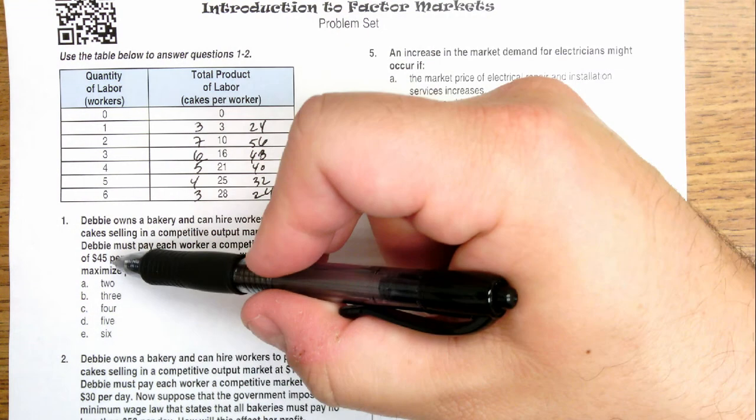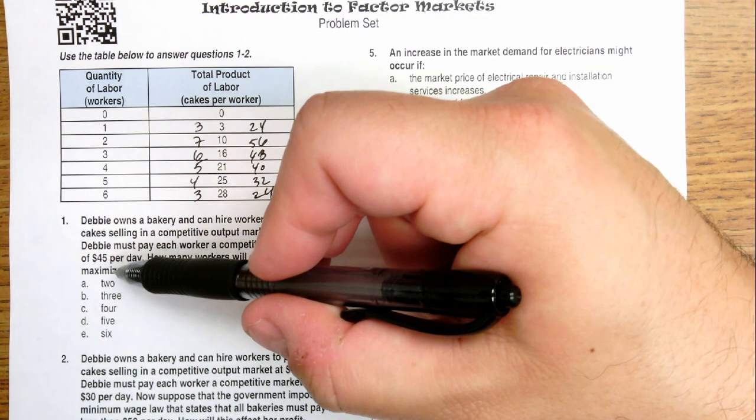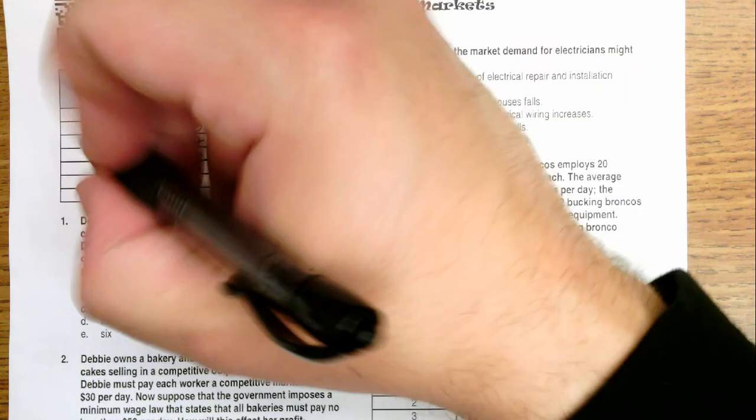So the optimal number of people hired by Debbie should be three. Thank you.